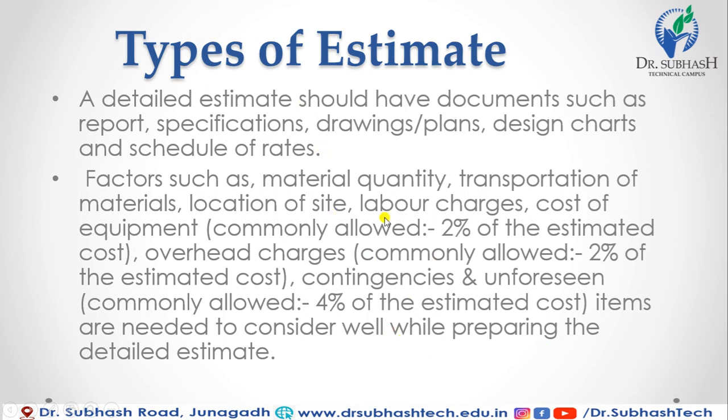Contingency and unforeseen items are commonly allowed at four percentage of the estimated cost. So the detail estimate considers material quantity, transportation, location, labor charges, equipment cost at 2%, overhead charges at 2%, and contingency at 4% of the estimated cost.